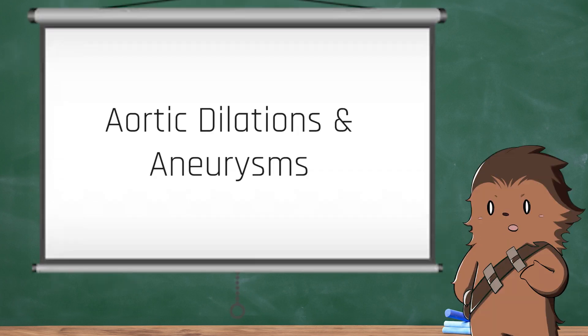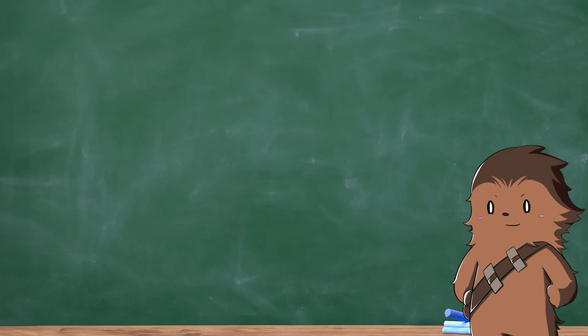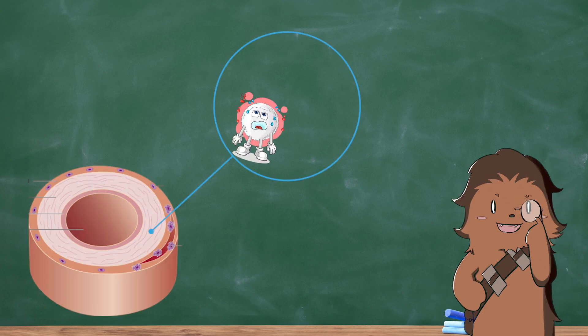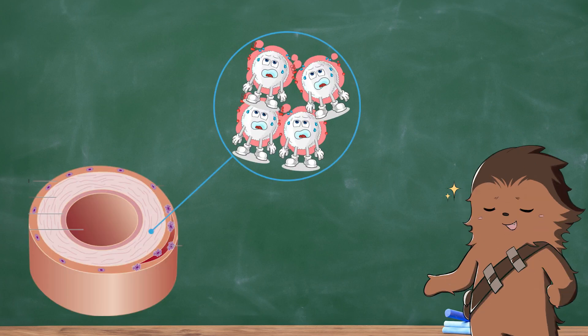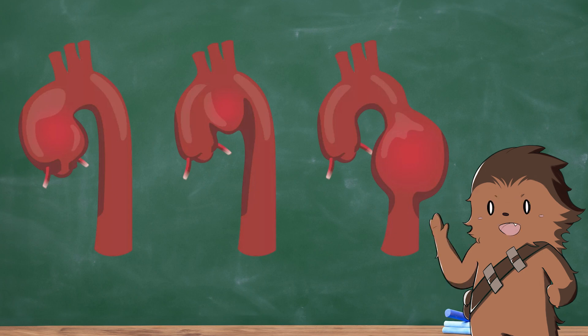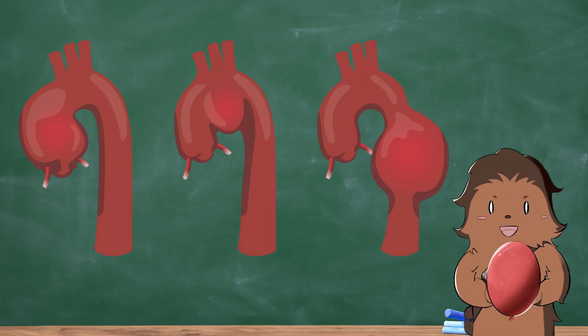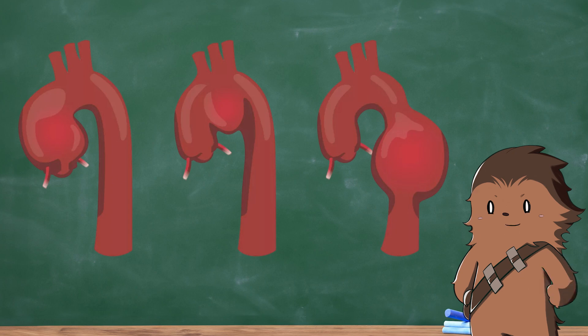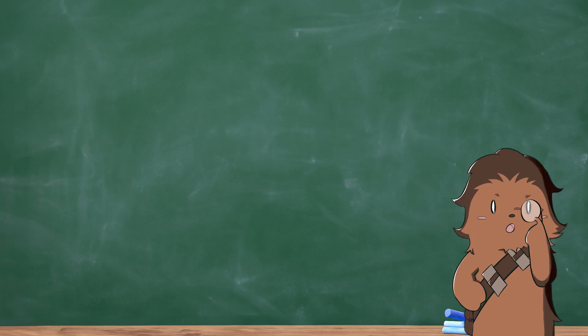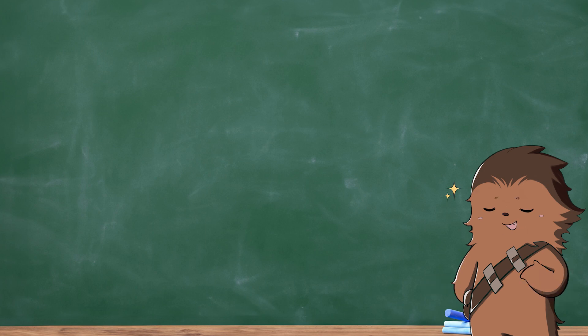Now let's dive into aortic dilation and aneurysms. You're probably wondering what that is. An aortic aneurysm develops when there is a weakness in the wall of your aorta. The pressure of blood pumping through the artery causes a balloon-like bulge in the weak area of your aorta called the aortic aneurysm. This bulge can cause your aorta to widen, which is called aortic dilation.